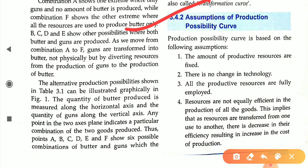Now, the assumptions of the PPC curve. First, the amount of productive resources is fixed. For example, if you have five laborers and three units of capital, these remain constant — you cannot increase labor or capital. Second, there is no change in technology — whether you are using a labor-intensive or capital-intensive technique, the technology remains constant throughout.